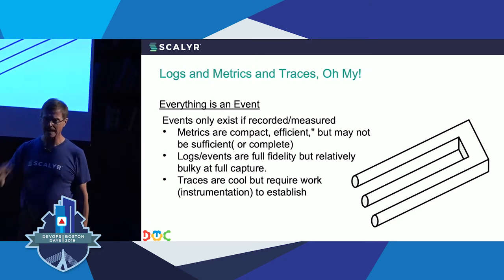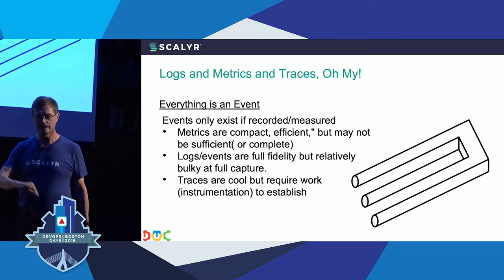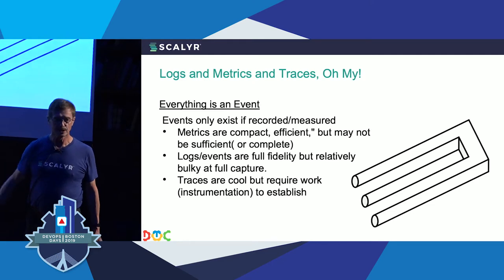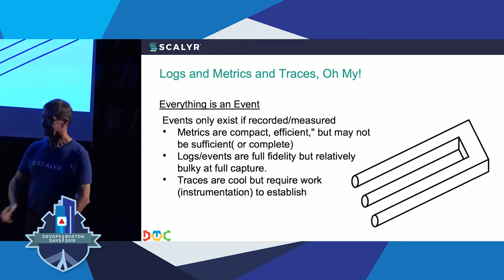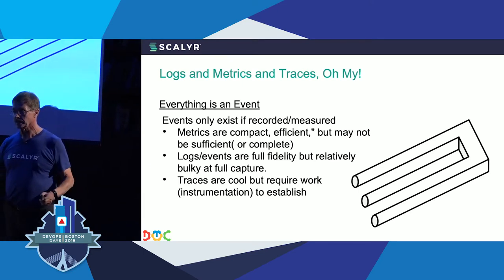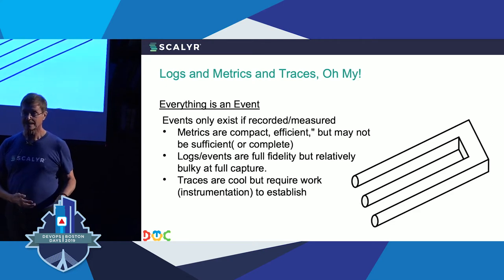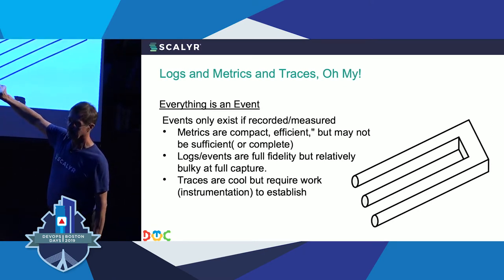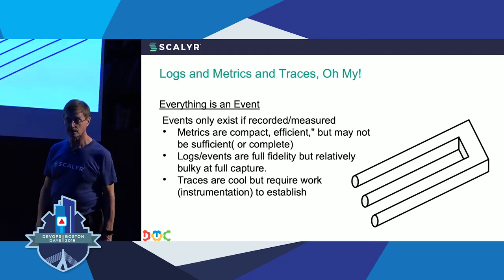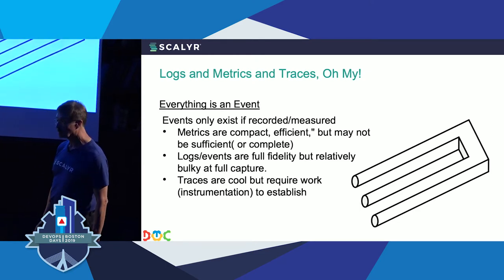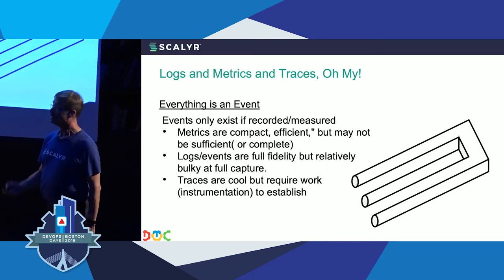Metrics are great — they're compact, efficient, and we as people can pattern match with the best of them. We extrapolate well, but extrapolation is also a risk. Logs are full fidelity — they tell you everything going on, but they're bulky and can be hard to deal with. Finding things can be really hard because of the volume. Traces make logs look like a tiny storage system: in a microservices environment, the average request can produce between 50 and 100 additional spans, so what would be 5 or 10 log entries becomes closer to 150 to 300.